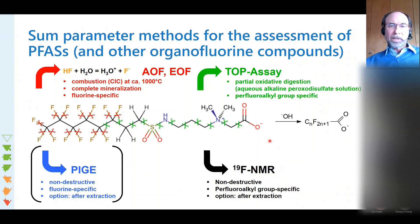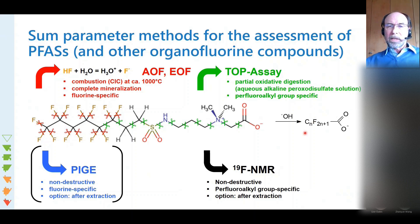The AOF, EOF, and the TOP assay are destructive methods. In AOF and EOF methods, the chemicals isolated from a sample are incinerated - combusted in an oven to give finally fluoride, which is detected. The TOP assay, on the other hand, is a partial oxidative digestion which produces perfluoroalkyl acids - carbonic acids - from perfluoroalkyl compounds. The other two techniques I don't want to discuss today because they are either too insensitive, like 19F NMR, or the instruments for PIGI are not available in most environmental labs.